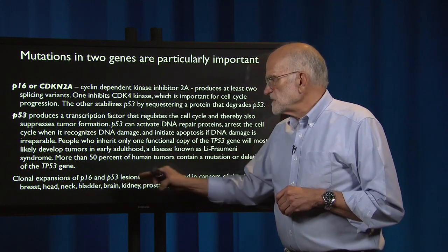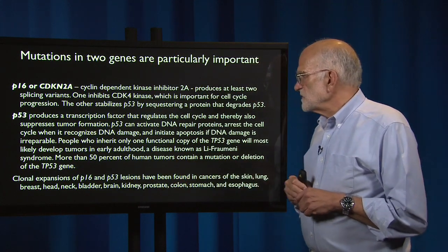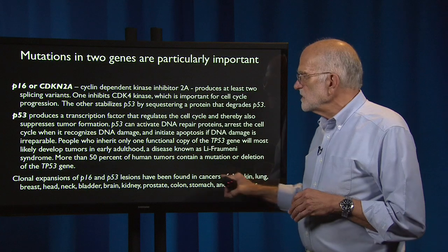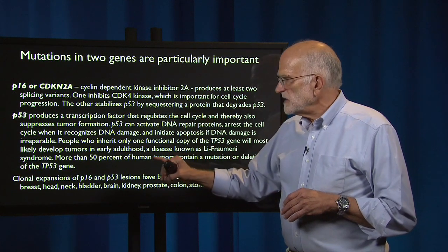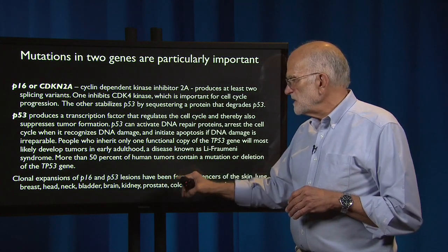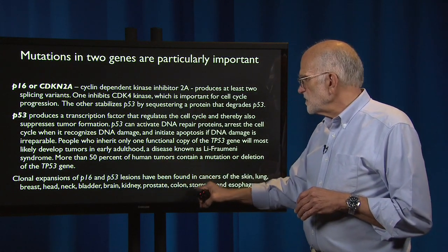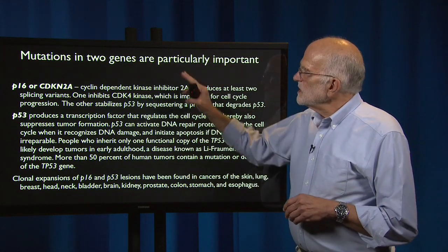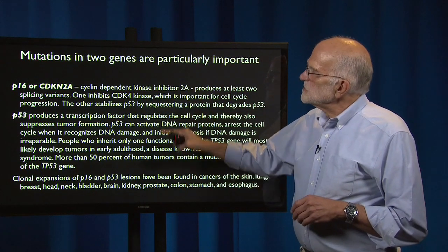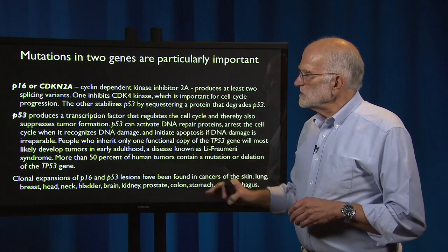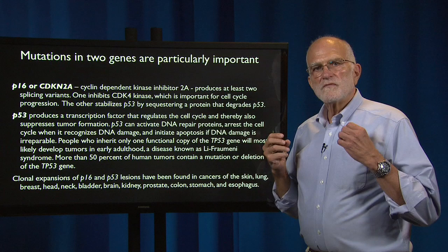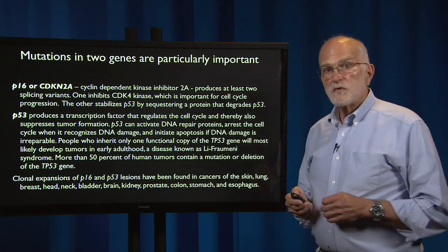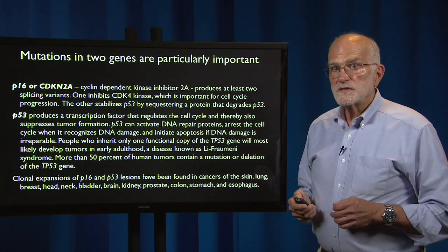Clonal expansions of P16 and P53 lesions have been found in cancers of skin, lung, breast, head, neck, bladder, brain, kidney, prostate, colon, stomach, and esophagus. In other words, these two genes are found to have mutated in a very wide and important range of cancers.